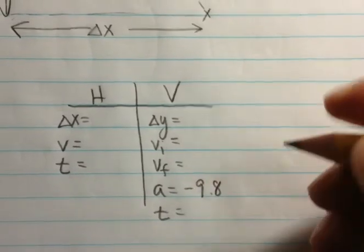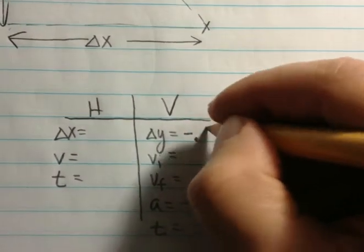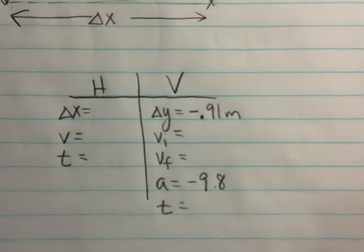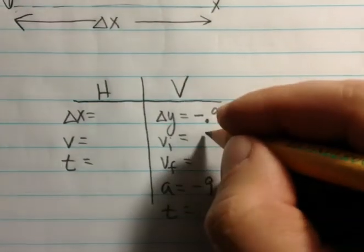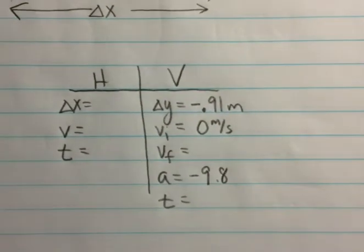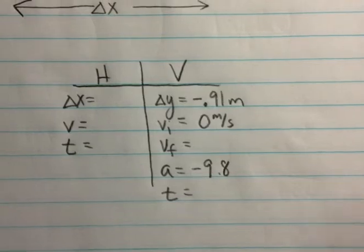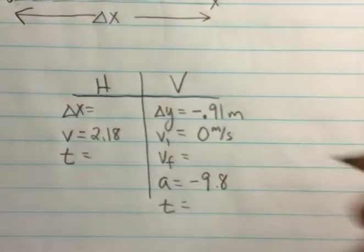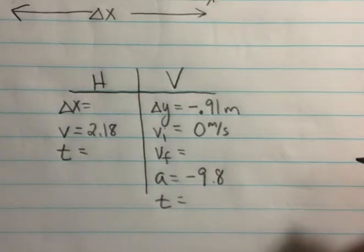Because this takes place on Earth, we're going to have an acceleration of negative 9.8. The lab table is 91 centimeters tall, so it's going to fall a distance of 0.91 meters. It's going to have an initial velocity of zero in the vertical direction because it was moving only horizontally, and then we're going to have a horizontal speed of 2.18 meters per second.